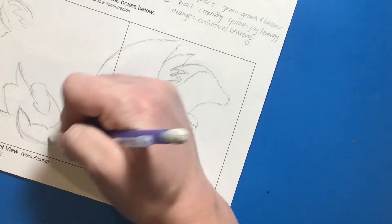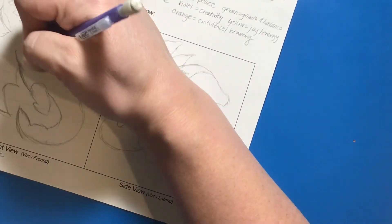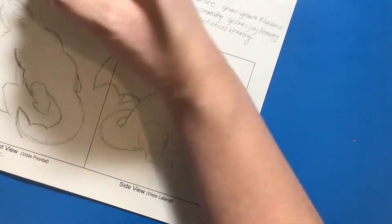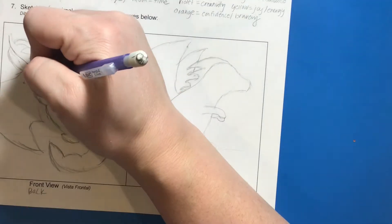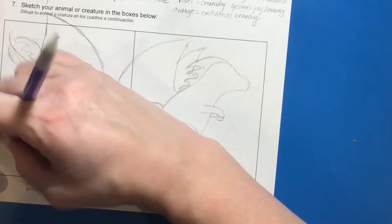And then once I got finished with the profile or side view, then I actually decided to sketch it from the back view because I really wanted to have some space to think about my patterns on my wings, on both sides of my wings. And so I tried to show that from both views.